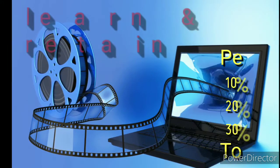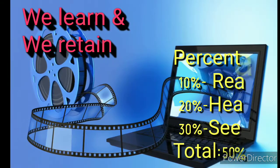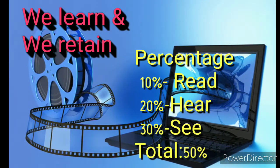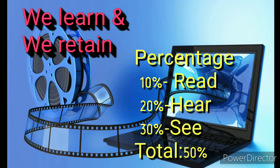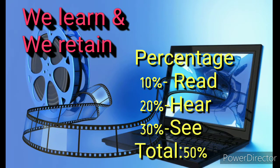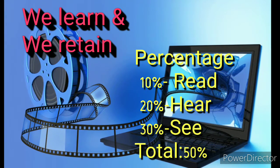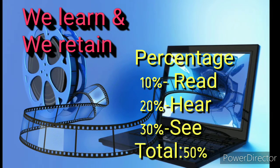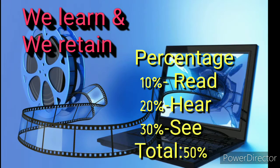In audiovisual aids, these are the words that we develop — we learn and we retain. In learning and retaining, these are the percentages: 10% for what we read, 20% for what we hear, 30% for what we see, and the total percentage for what we hear and see combined is 50%.